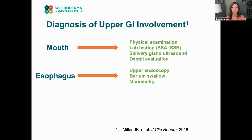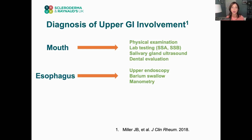For the esophagus, we do upper endoscopy — where the GI doctor looks down the esophagus with a camera, taking biopsies and pictures for a better look. A barium swallow looks at how the swallowing mechanism works and whether there are areas of narrowing or strictures. Manometry looks at muscle contractions — it will tell you whether the muscles are contracting at all, and if so, where: the upper, mid, or lower part of the esophagus.